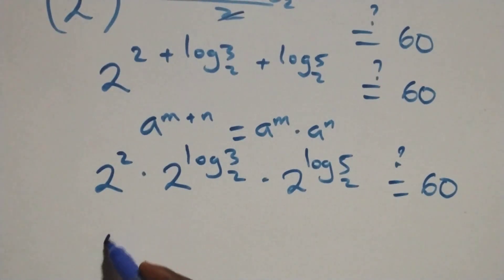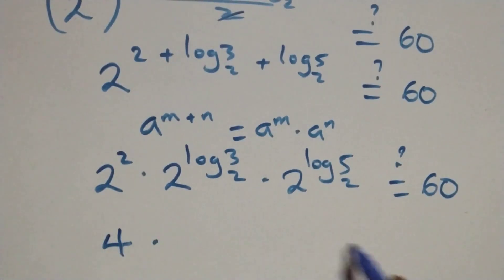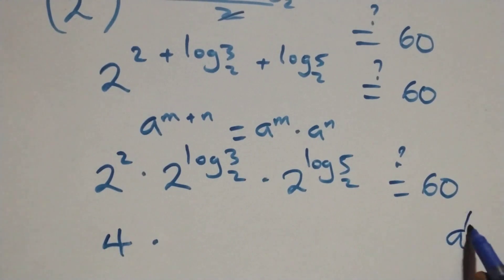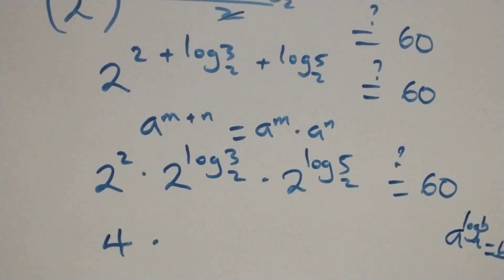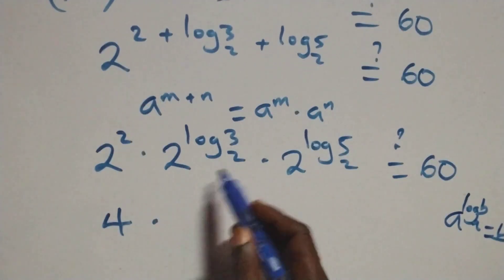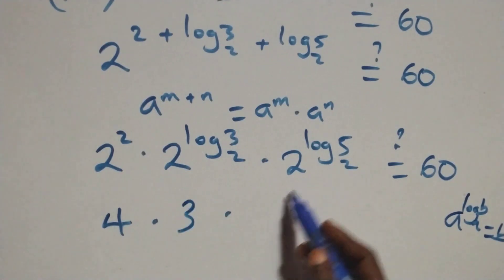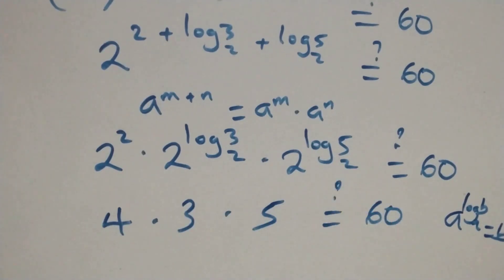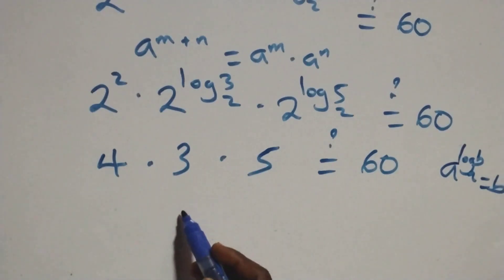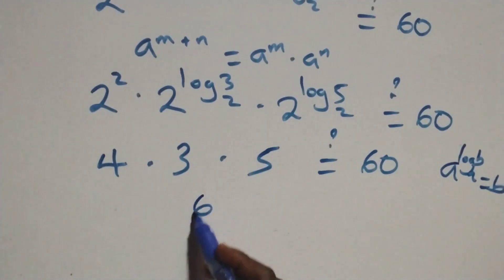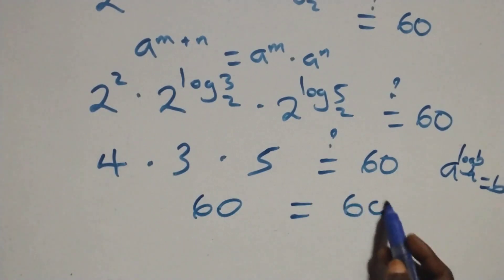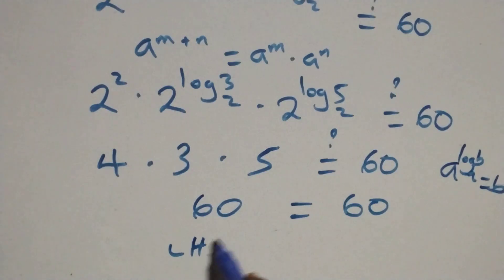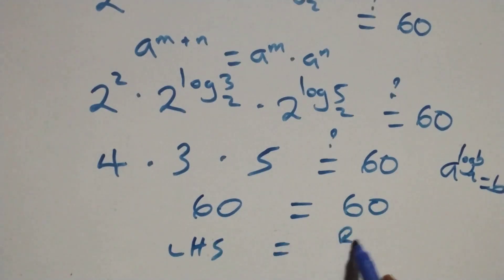Two raised to power two is four. Then, applying the law: a raised to power log base a of b equals b, we have four times three times five equals sixty. Four times three is twelve, and twelve times five is sixty, which equals sixty on the right-hand side. The left-hand side equals the right-hand side.